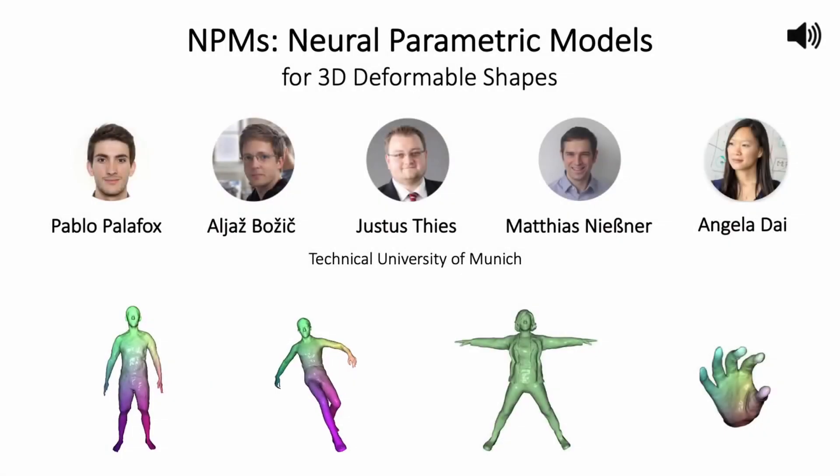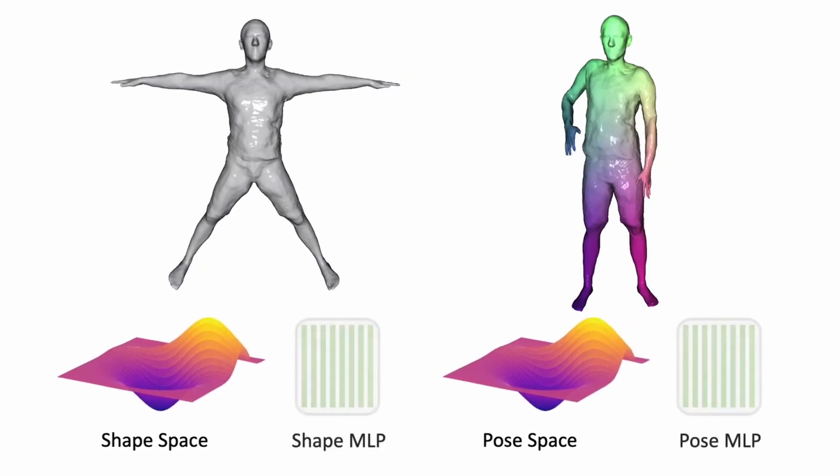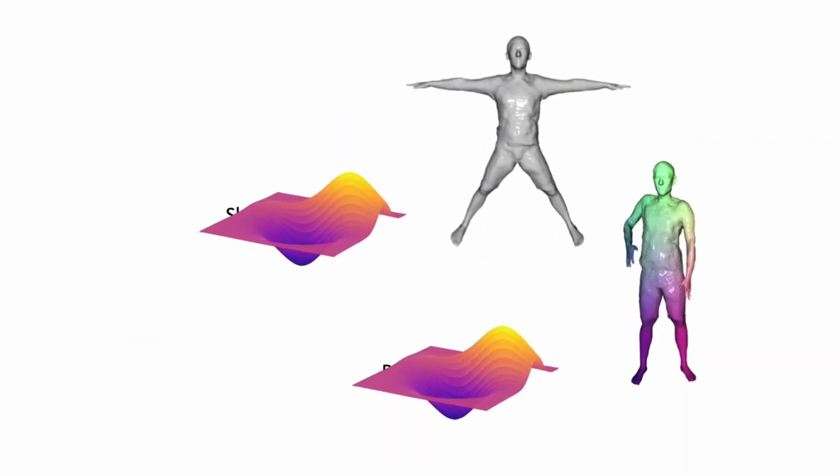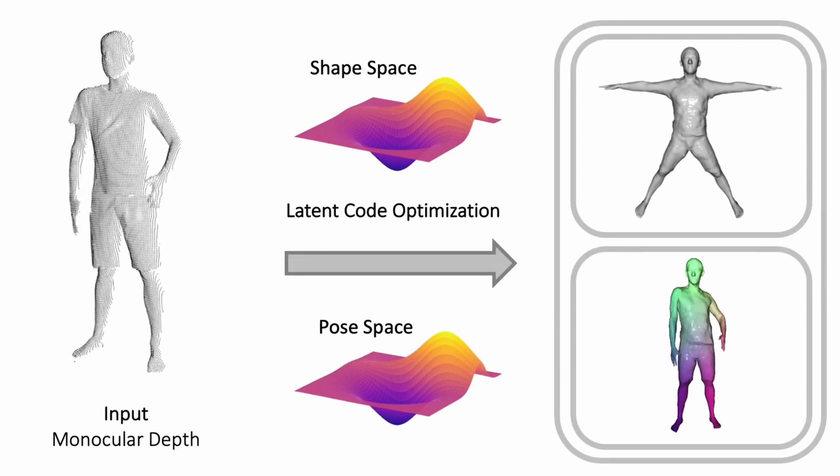We present neural parametric models for 3D deformable shapes, a learned approach to disentangle 4D dynamics into latent space representations of shape and pose. In practice, our implicit shape and pose spaces are implemented as two separate multilayer perceptrons. Once learned, NPMs enable test time optimization over the learned spaces to fit new observations.